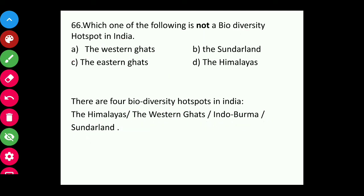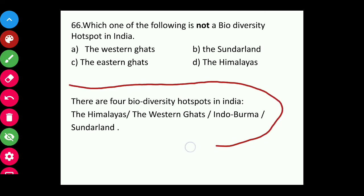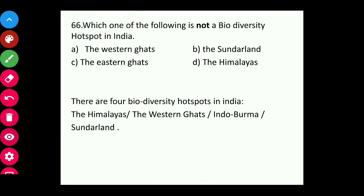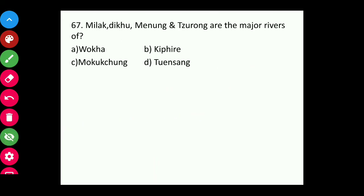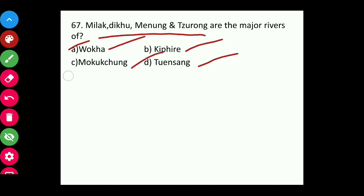Take a screenshot of this and note it down — it is very important from an exam perspective. Question sixty-seven: Milak, Deku, Menung, and Tsurong are the major rivers of which district — Wokha, Kiphire, Mokokchung, or Tuensang? The answer is Mokokchung.